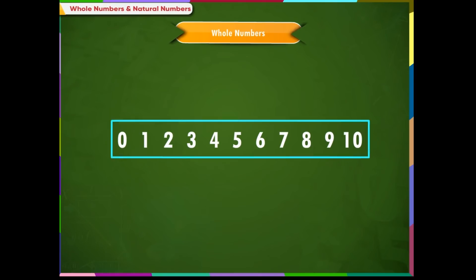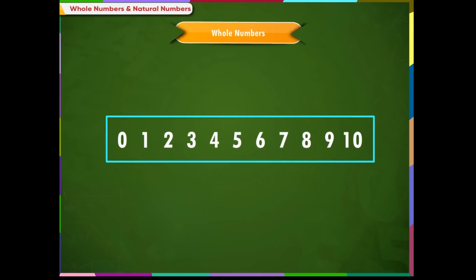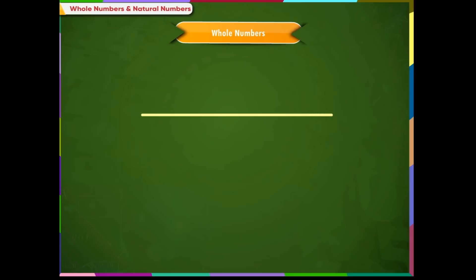So, the number 0 together with the collection of natural numbers are called whole numbers. In this number line, we see that the number 6 is before the number 7. So, the number 6 is the predecessor of the number 7, which is a whole number.